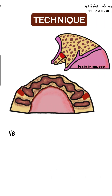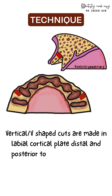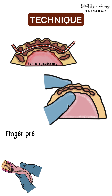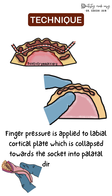The third step: V-shaped incisions or vertical cuts are made on the labial cortical plate only, distal to the canine as close as possible to the alveolus. At this point, three sides of the alveolus become free, and the labial cortex becomes freely movable, attached only to the mucoperiosteum for blood supply. As the alveolus is freely movable, the next step involves applying finger pressure on the labial cortical plate to collapse the bone toward the socket in the palatal direction, pushing it backward to reduce the overjet.